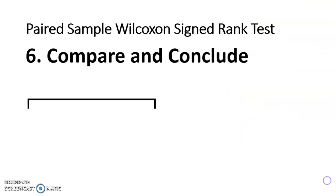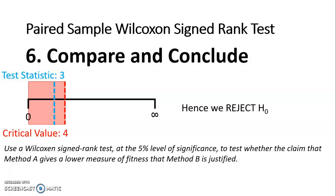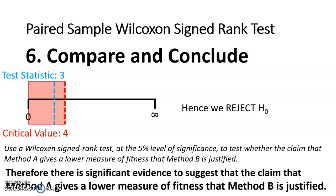To compare and conclude, I draw a line from zero to infinity, identify the critical value and critical region on that line. Anything in the red region is the reject region. My test statistic was 3, which falls before 4, so we are rejecting H0. Going back to the question, since we reject H0 we cannot say the difference is zero, and therefore we are justifying the claim. In context: there is significant evidence to suggest that the claim that method A gives a lower measure of fitness than method B is justified.